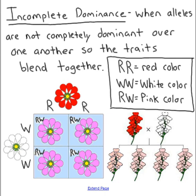The other trait we're going to talk about is incomplete dominance. This is when alleles are not completely dominant over one another, so the traits actually blend together — this is where red and white come together to make pink. We see this in flowers. We let RR represent red and WW represent white. Notice both letters are capital because they're both dominant. When they come together as the heterozygous RW, the result is pink, as shown in the Punnett square — red crossed with white makes all heterozygous offspring.